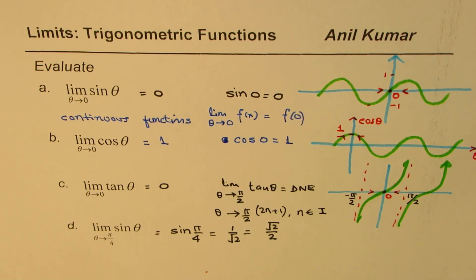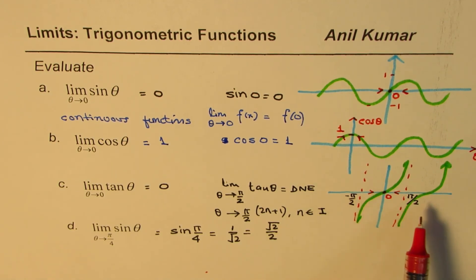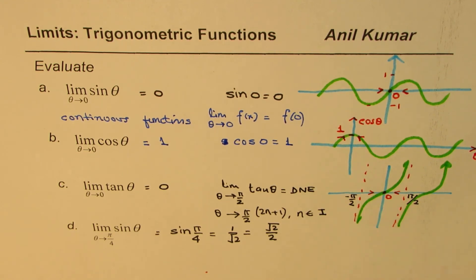This video tells us that sine and cosine functions are continuous — their limits at any point are the same as the value of the function at that point. Tan θ is a discontinuous function and may not have a limit at certain points, specifically at odd multiples of π/2. At all other places its limit equals the value of the function. I'm Anil Kumar — let's move on to the next video in this series on trigonometric function limits. I hope that helps. Thank you and all the best.